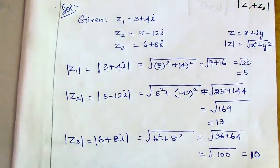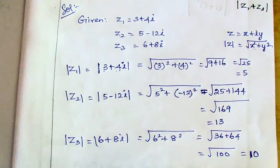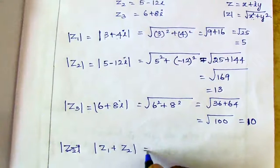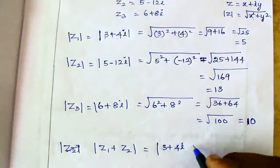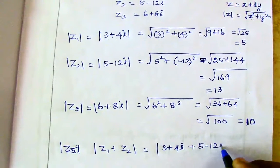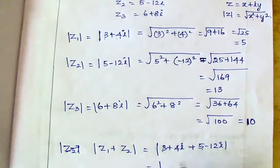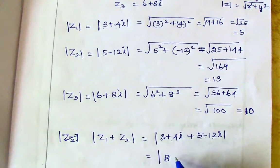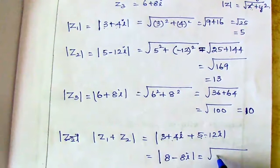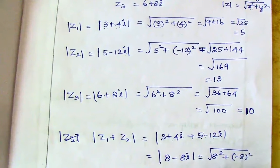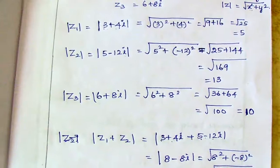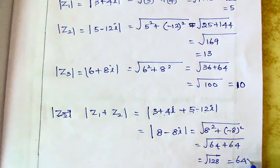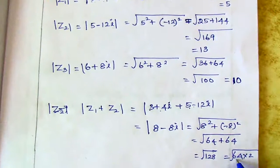Next, modulus of z1 plus z2. z1 is 3 plus 4i and z2 is 5 minus 12i. Adding them: 3 plus 5 gives 8, and 4i plus minus 12i gives minus 8i. So z1 plus z2 equals 8 minus 8i. The modulus value: square root of 8 squared plus minus 8 squared equals square root of 64 plus 64, which gives root of 128. Simplifying root 128 as 64 times 2, the answer is 8 root 2.